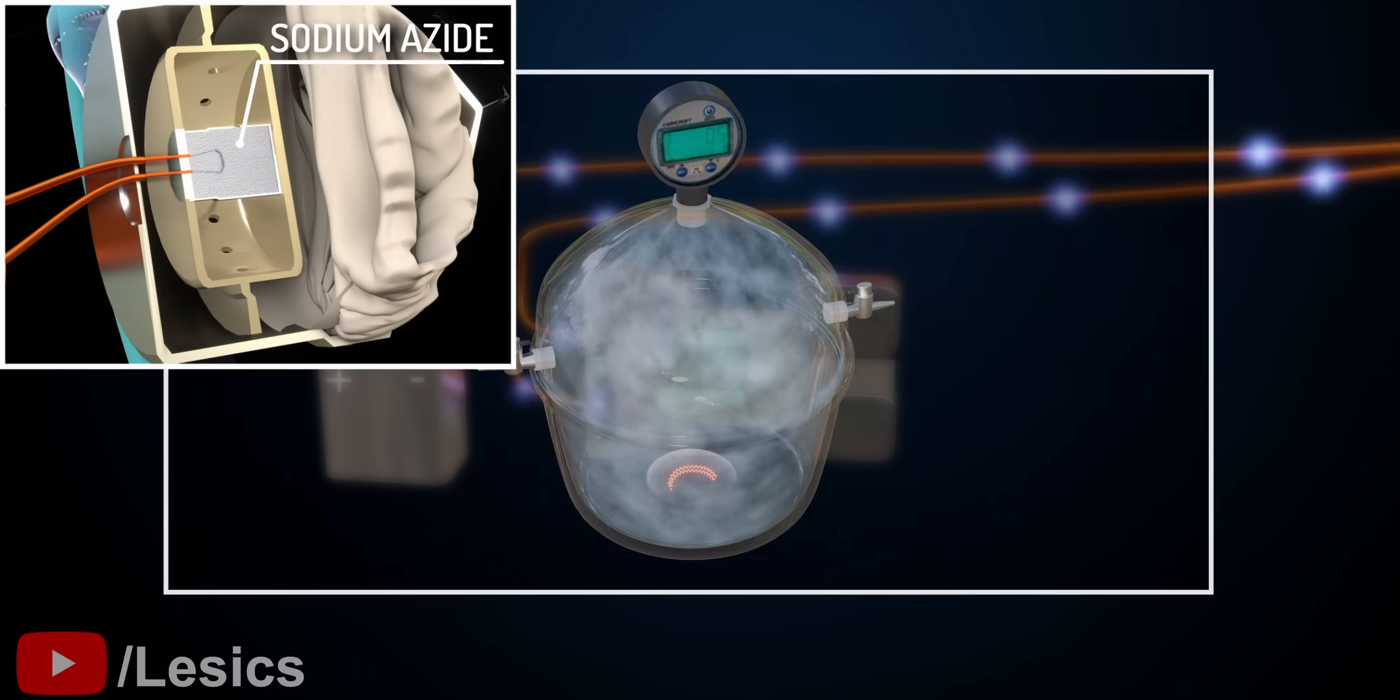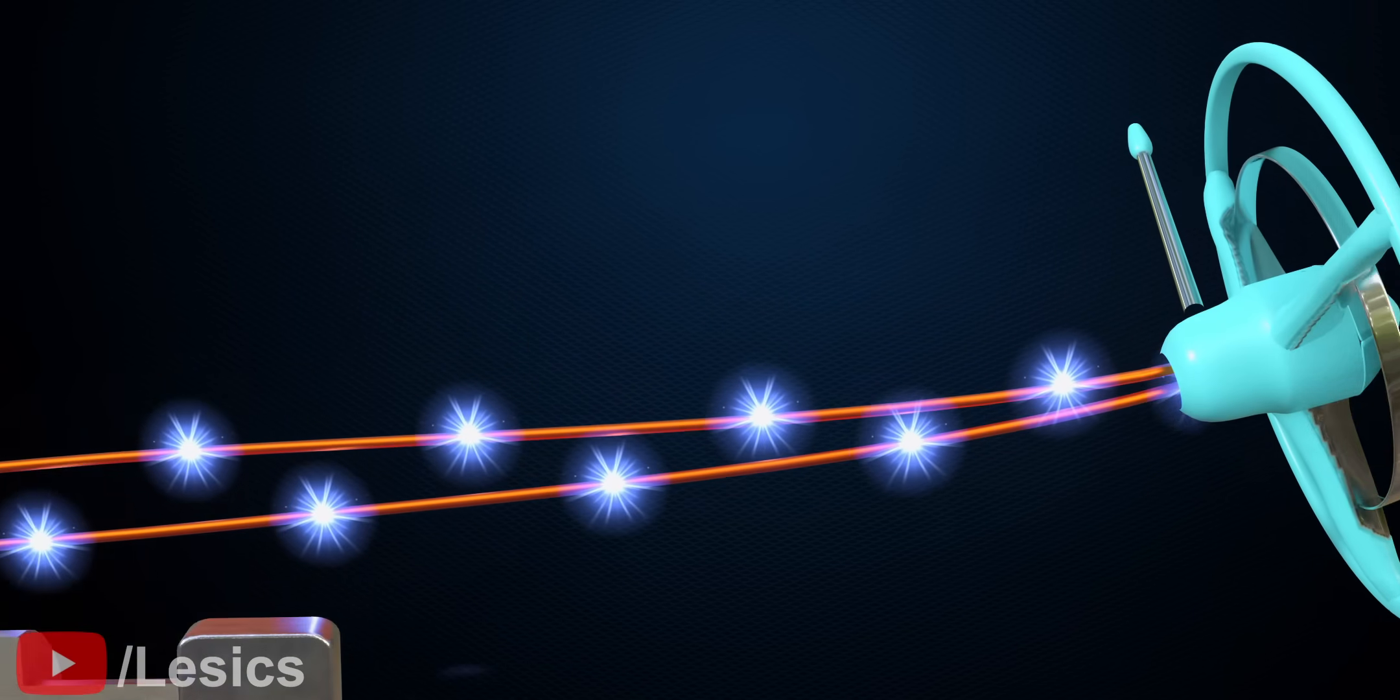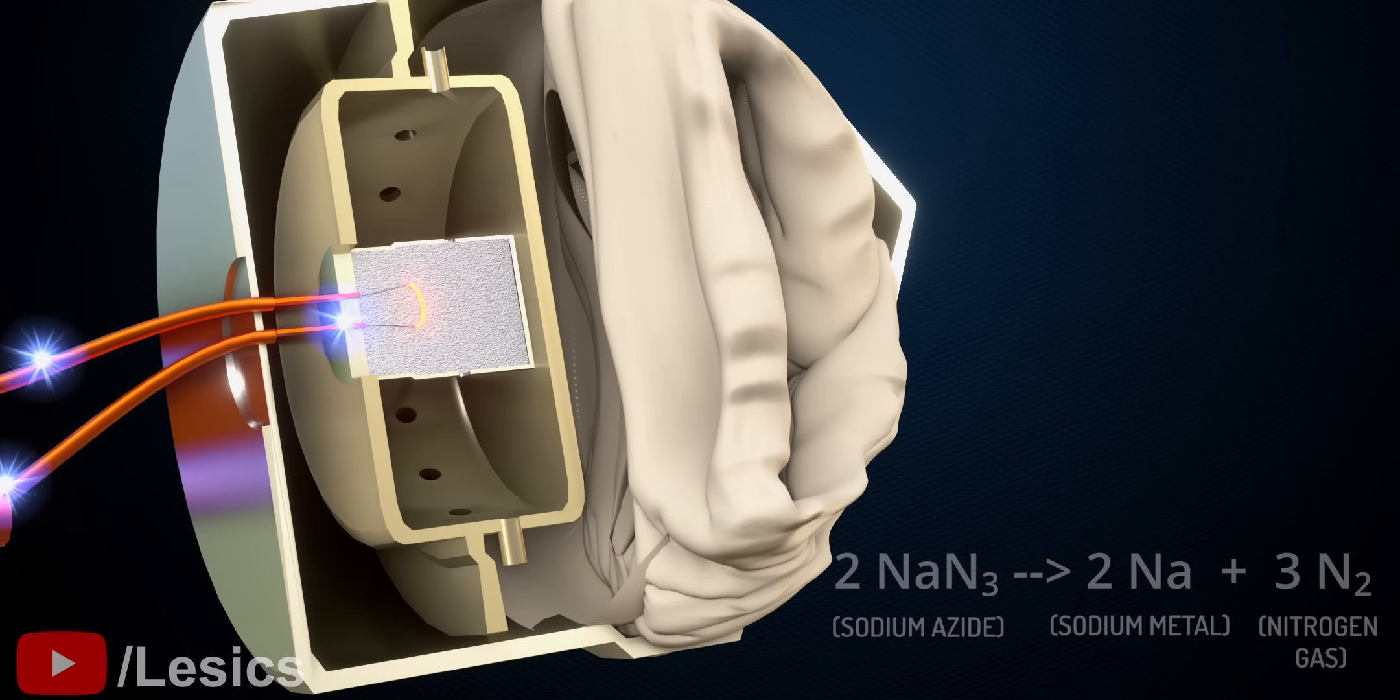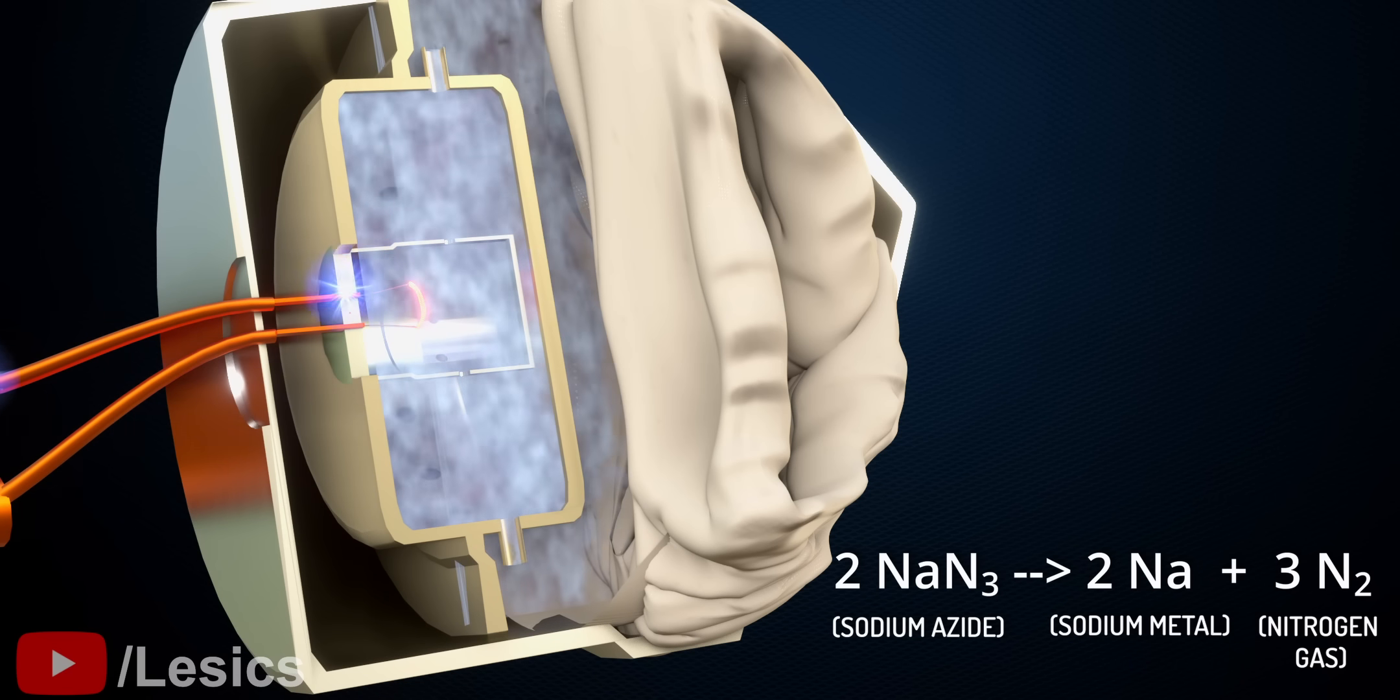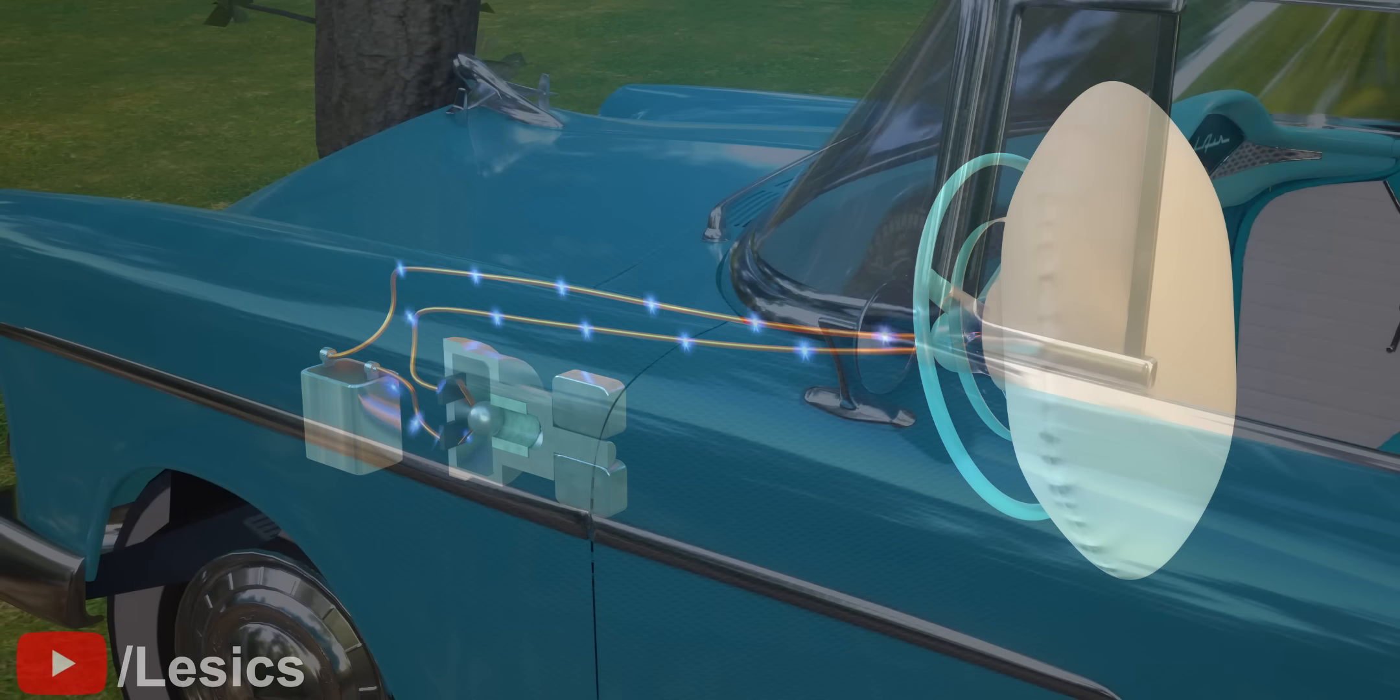The electric signal sent by the ball sensor passes through a pyrotechnic device. It is a thin, resistant wire. When the current passes through it, it generates a temperature of more than 300 degrees Celsius. This causes the sodium azide to explode and generate nitrogen gas very quickly. This is able to inflate the bag within 30 milliseconds. These two breakthroughs made airbags possible for commercial use.